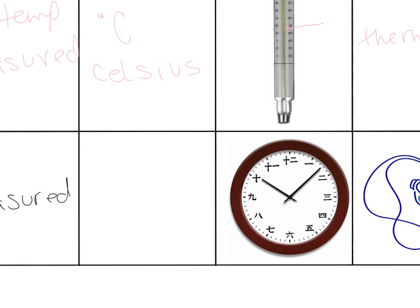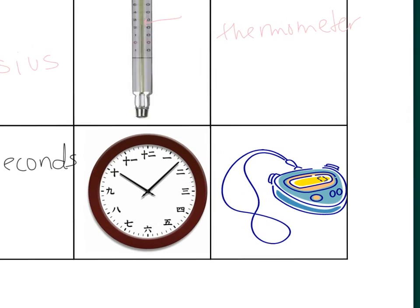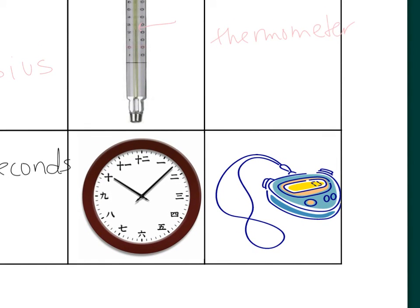The units for time are seconds, which is a lowercase s. We measure time using a clock or a stopwatch or a timer. Most of the time we'll just use the timers on your phones or on another electronic device that you have.